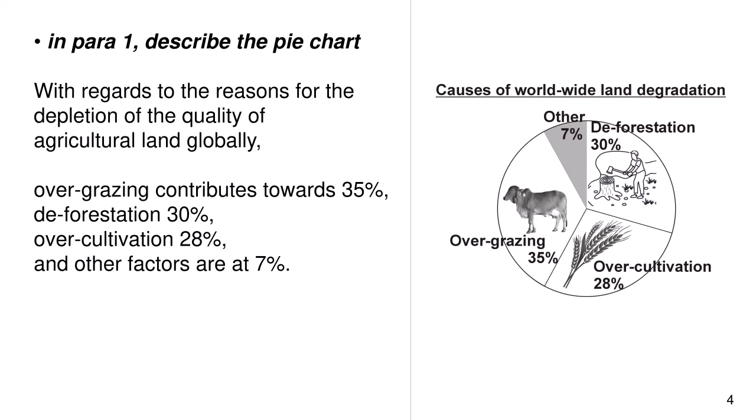In paragraph 1, describe the pie chart. With regards to the reasons for the depletion of the quality of agricultural land globally, overgrazing contributes towards 35%, deforestation 30%, overcultivation 28%, and other factors are at 7%.